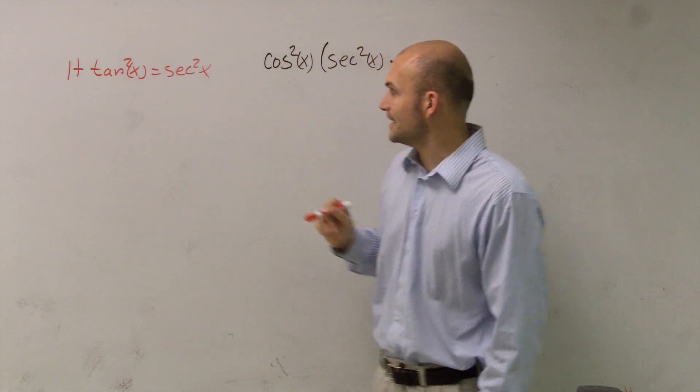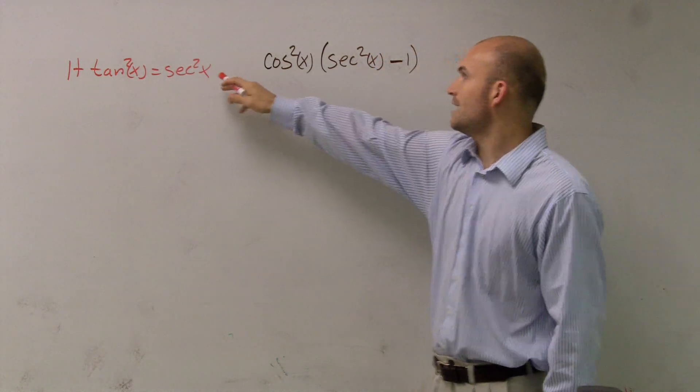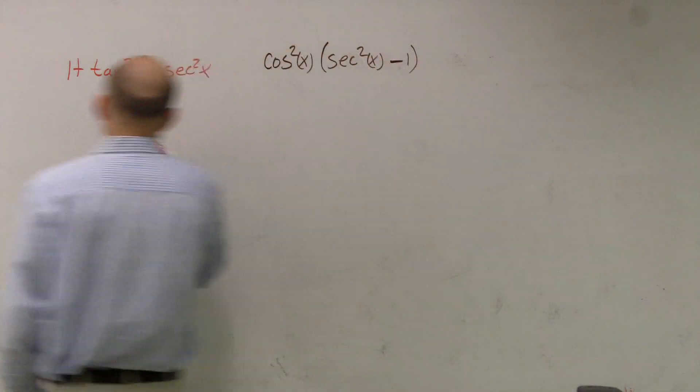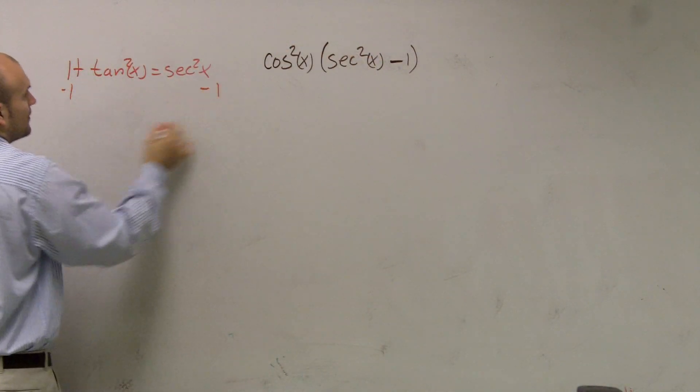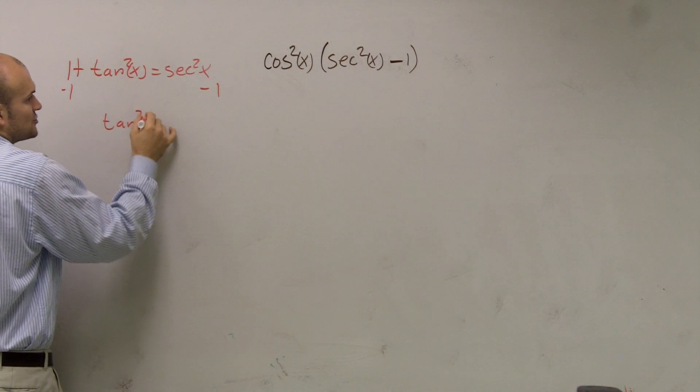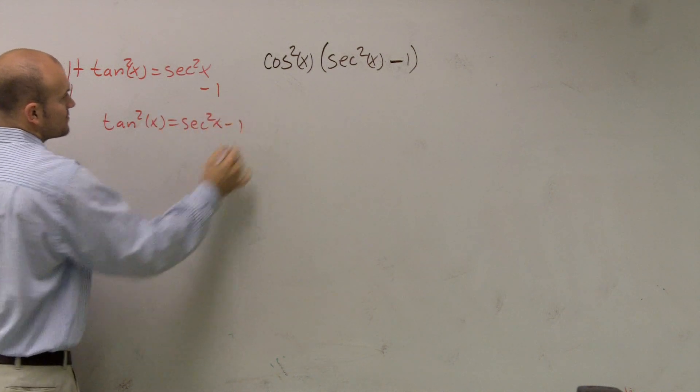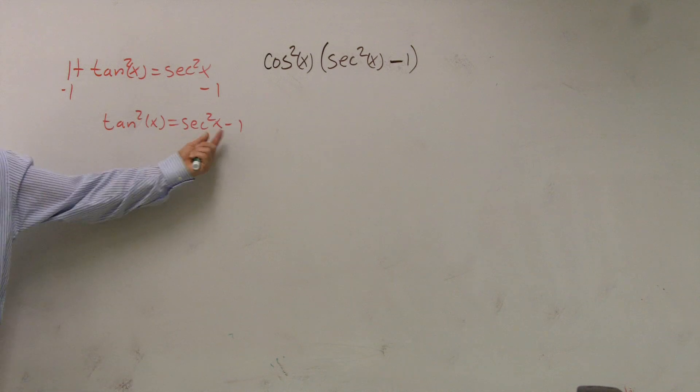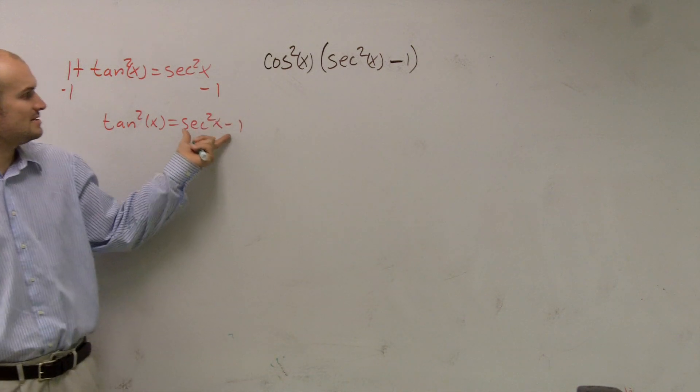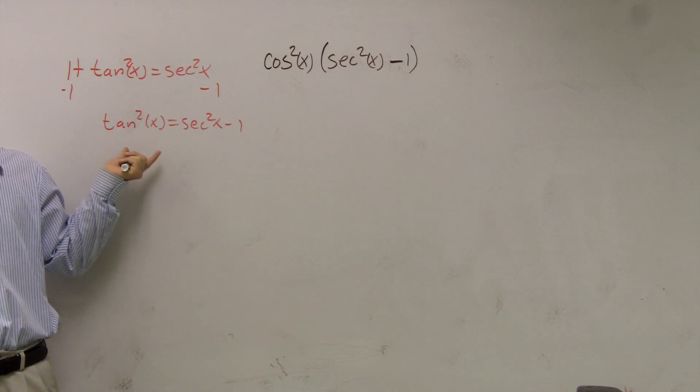So if you're given this, how can you rewrite it for secant squared minus 1? Well, if I subtract the 1 on both sides, I'll be left with tangent squared of x equals secant squared of x minus 1. So now I can rewrite secant squared of x minus 1 for tangent squared of x.